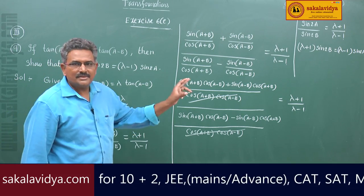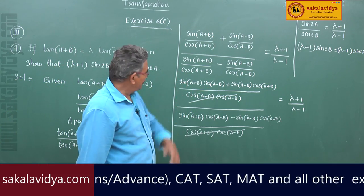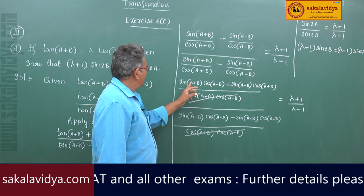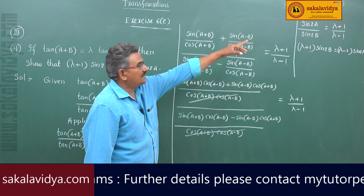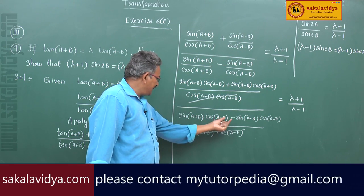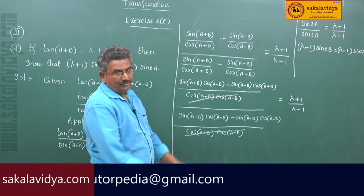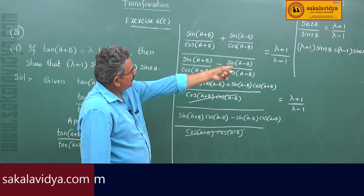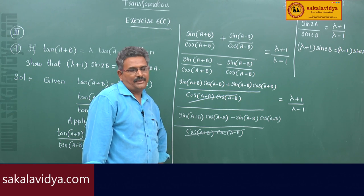To recap: sin(A+B+A-B) gives sin(2A) as the B's cancel, and sin(A+B-(A-B)) gives sin(2B) as the A's cancel. By cross multiplication we get (λ+1)·sin(2B) is equal to (λ-1)·sin(2A). Hence proved.